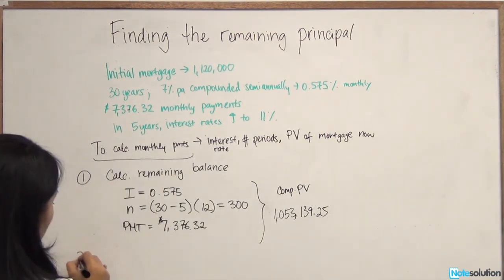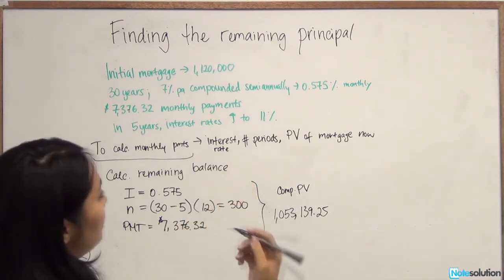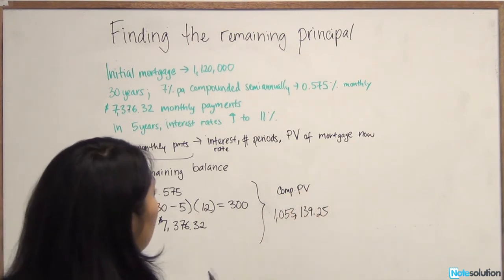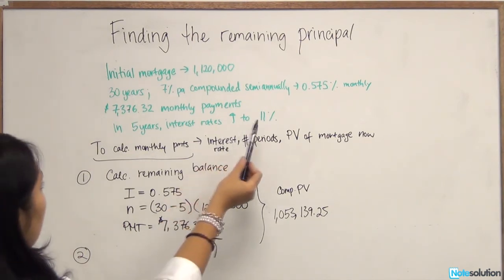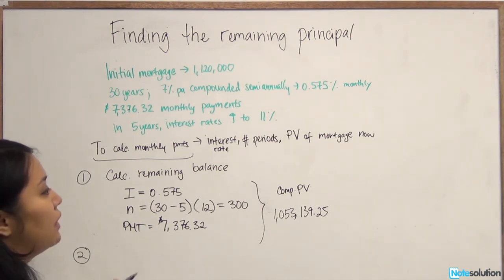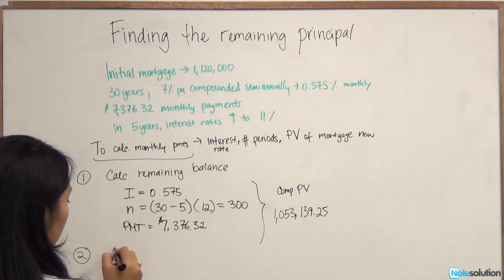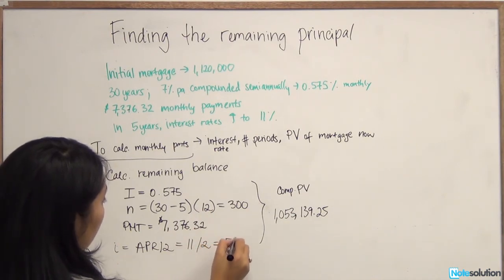So step two is we need to make sure that we have everything in monthly terms. The number of periods easily converted into monthly terms. Present value of the mortgage now, we already have. But we do have the interest rates stated to us in semi-annual compounded terms. So we're going to convert that to monthly. You follow the process for converting the APRs stated in semi-annual terms to monthly terms. First step is define the I, which is defined as APR divided by 2. So we have 11 divided by 2, 5.5%.